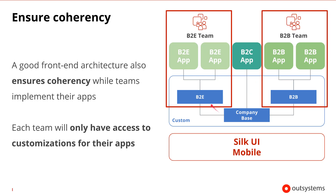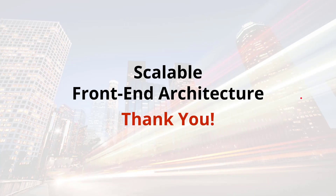A good frontend architecture also ensures coherency while teams are implementing their apps. That's because each team will only have permissions to use the customizations for their apps, and won't mix with the implementation of other apps from other teams. So that's it for this session on scalable frontend architecture. Thanks for listening, and have a good day.